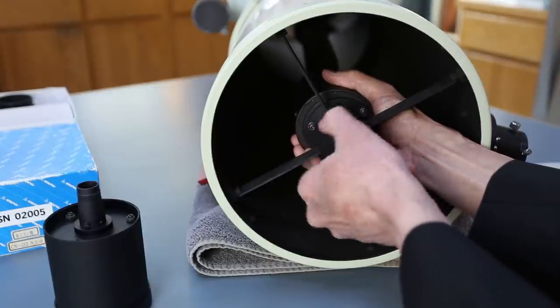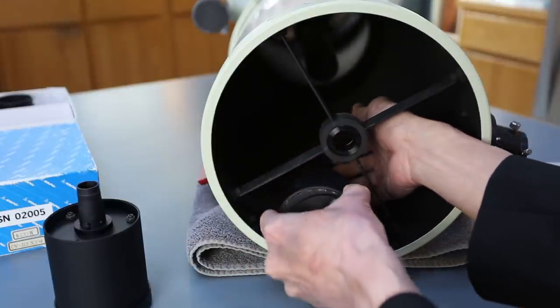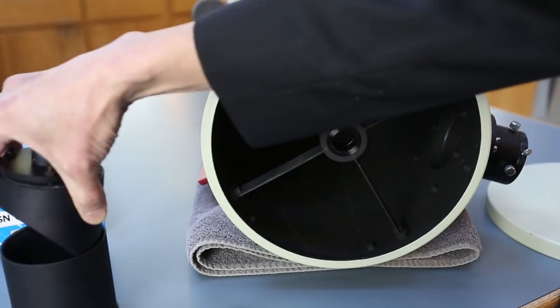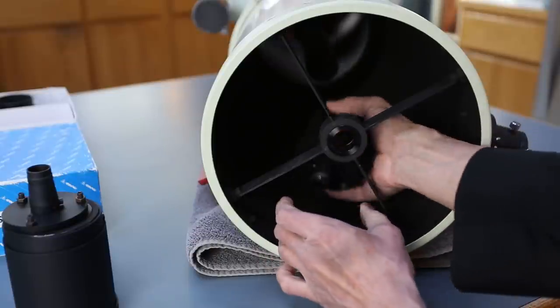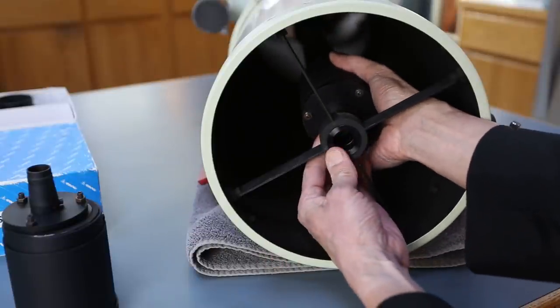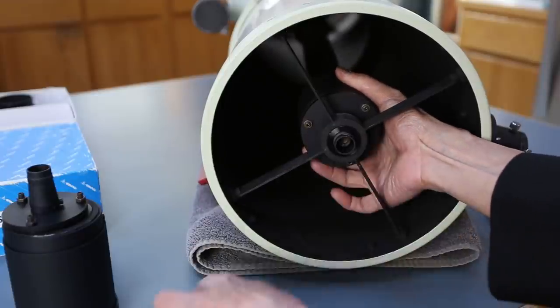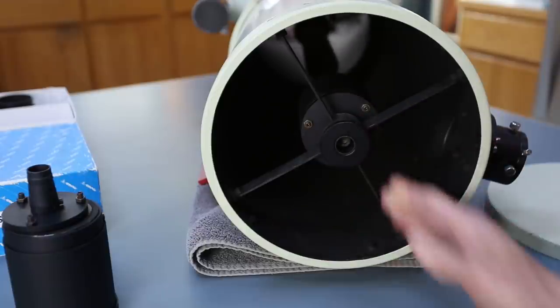grab the secondary, it comes out. That's the secondary for the cassegrain here. Again, there's the key. Just kind of feel around until the key goes in. And there you go.